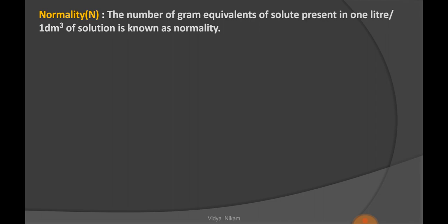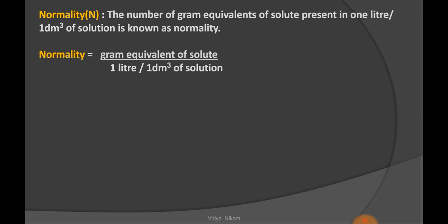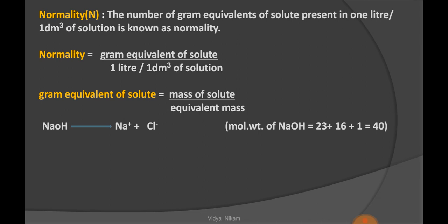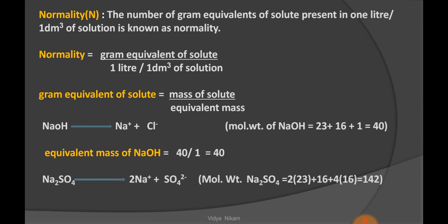The next term is normality, denoted by capital N. Normality is defined as the number of gram equivalents of solute present in one liter (or one dm³) of solution. It is the ratio of gram equivalents of solute divided by volume of solution in liters. Gram equivalent of solute is calculated as mass of solute divided by equivalent mass. Equivalent mass of solute is calculated as: for NaOH dissociating into Na⁺ and OH⁻ ions, equivalent mass equals molar mass divided by the numerical charge on the ions plus one.